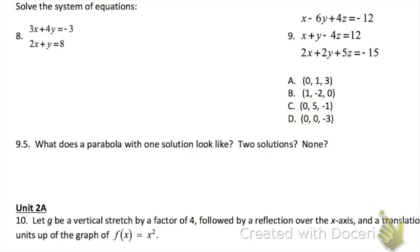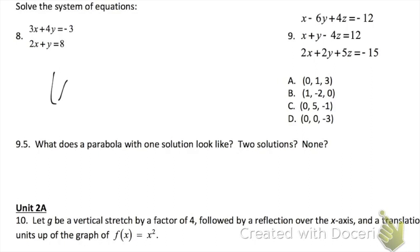Problem 8. You could solve this by either substitution or elimination. For substitution, solve for Y by moving the 2x over, then plug in what you got for Y into the other equation. If you do elimination — which is what I'd personally do — multiply the bottom equation by negative 4 to get a negative 4Y. When you add down, the 4Y and negative 4Y cancel out. Remember your answer should be a point, X comma Y. Once you find X, make sure you solve for Y.